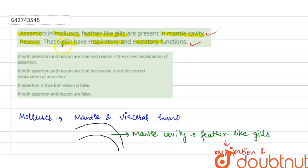But the reason statement, which says that gills have respiratory and excretory functions, defines the function of the gills, while the assertion defines the location of gills. That is why the reason does not explain the assertion.